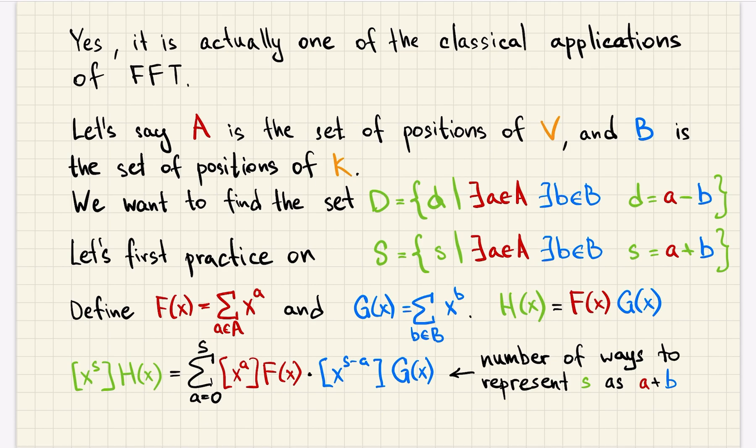such that a minus b is the distance. So we want to find all d that can be represented as a difference between a and b. Let's first practice on a similar problem where instead of difference we have sum, so for given sets a and b we want to find a set s which consists of numbers that are representable as a sum where one number is from set a and the other number is from set b.